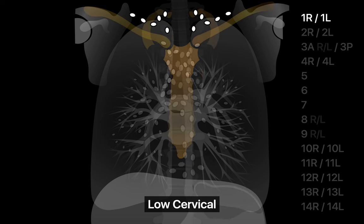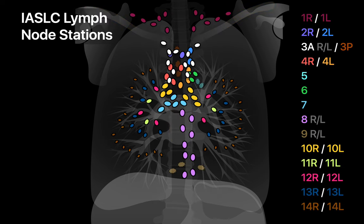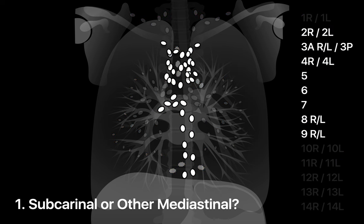Finally, low cervical lymph nodes are in the lower neck, superior to the clavicles, manubrium, and thoracic inlet, station 1R on the right and 1L on the left. Fourteen stations can be a lot to wrap your head around at first, so it's important to understand what you need to take away from this lymph node map to reliably distinguish N1 from N2 cases and N2 from N3 cases. That means being comfortable with five tasks.